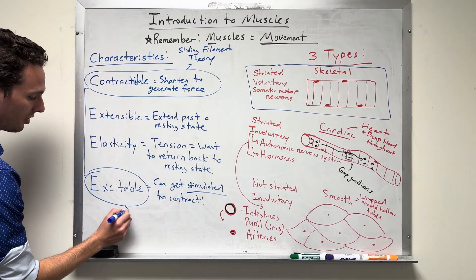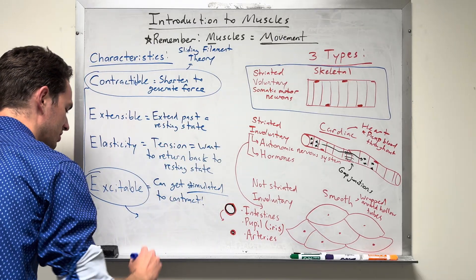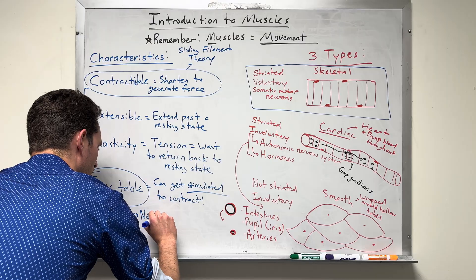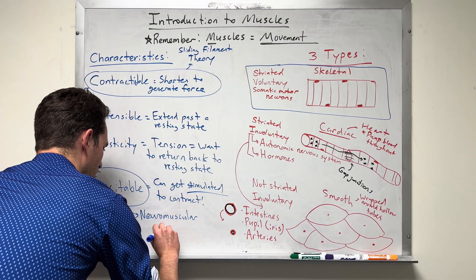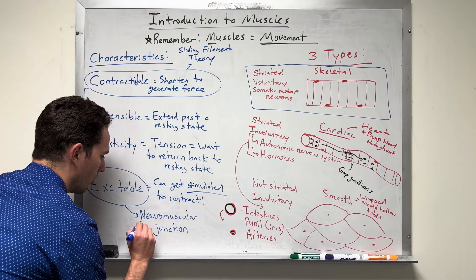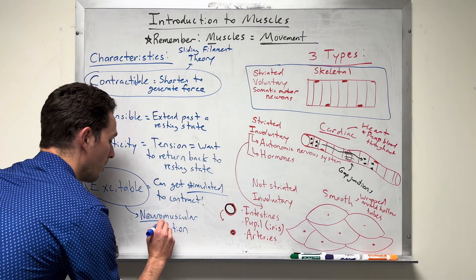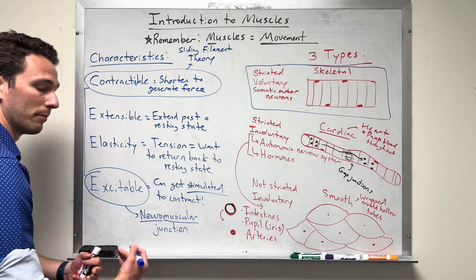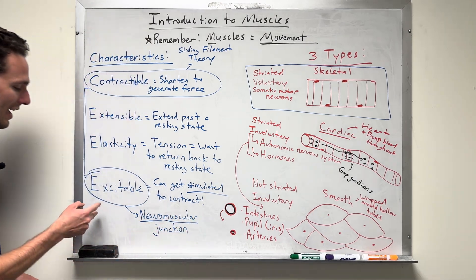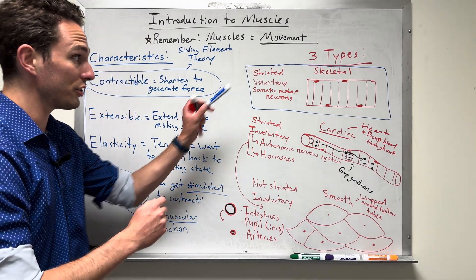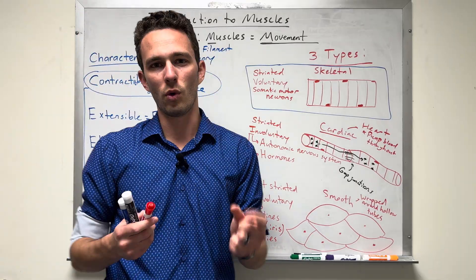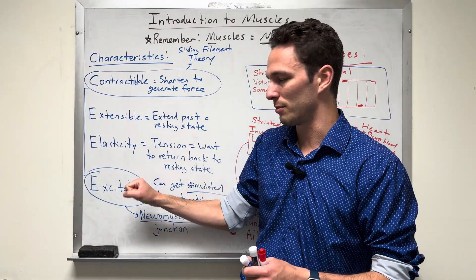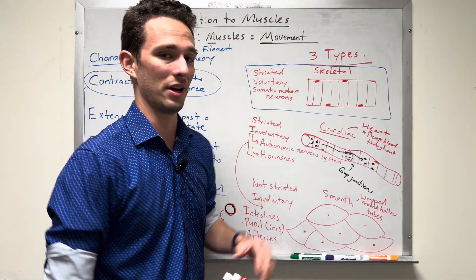However, the excitability aspect for skeletal muscles is going to be called the neuromuscular junction. That is going to be the location at which a neuron communicates to a muscle, and it's the space where they come together. So that's going to explain how muscle cells, specifically skeletal muscle cells, can get excited. So as we go through the rest of these videos, I want you to focus on those two things, contractability and excitability, specifically for skeletal muscles.